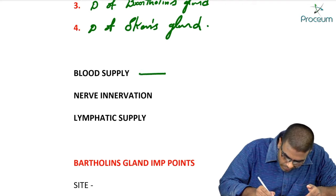The blood supply of the vulva comes from the internal pudendal artery. The nerve supply for the vulva comes from the pudendal nerve. The root value of the pudendal nerve is from S2 to S4 segments.